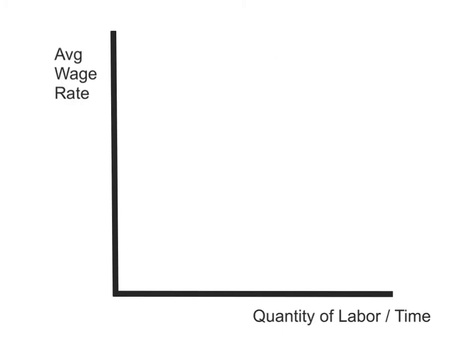Our labor market diagram will be very similar to what we know from microeconomics and most of macro. We're going to build it with some slight differences, though. On the y-axis, we have average wage rate — just talking about the cost of labor. And on the x-axis, we're looking at the quantity of labor that's employed at any given time.